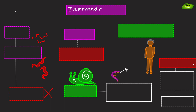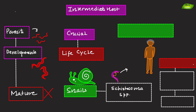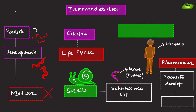Intermediate hosts are those in which a parasite undergoes development but does not reach maturity. These hosts are crucial for the parasite's life cycle. For example, snails act as intermediate hosts for Schistosoma species, where the larvae develop before infecting humans. A second example is humans for Plasmodium species — in the life cycle of Plasmodium, humans are intermediate hosts as the parasite develops within them before being transmitted to mosquitoes.